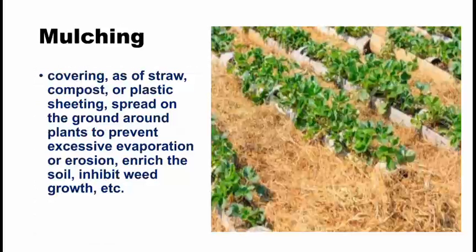In mulching, the area around the crop is covered by straw, compost, plastic sheeting, or previous crop residue. This mulch residue reduces runoff velocity, soil erosion, and evaporation loss as well.